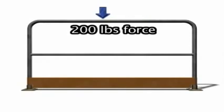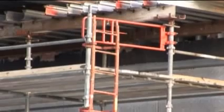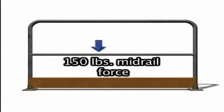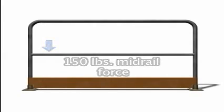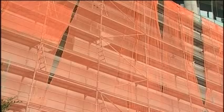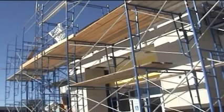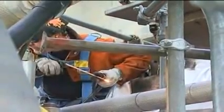The top rail must be able to withstand a force of at least 200 pounds applied either downward or horizontally at any point along its top edge. The top edge height of top rails must be between 38 and 45 inches. Mid rails, screens, mesh, intermediate vertical members and solid panels must be able to withstand a force of at least 150 pounds applied in any downward or horizontal direction at any point along the mid rail. Mid rails must be installed at a height approximately midway between the top edge of the guardrail system and the platform surface. If utilized, screens and mesh must extend from the top edge of the guardrail system to the scaffold platform and along the entire opening between supports. Intermediate members such as balusters or additional rails must not be more than 19 inches apart. Guardrails should have a smooth surface and not create a puncture or laceration hazard.